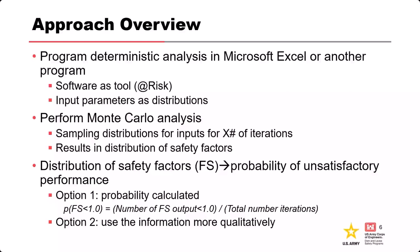The distribution of safety factors provides a probability of unsatisfactory performance — essentially an understanding of the likelihood of failure. There are two ways to use this. Number one: use it directly, plugging the result straight into your risk analysis. That is usually frowned upon because no model is as complex as reality — there's always going to be things left out. Option two: use the information more qualitatively, recognizing the shortcomings of those models and using results appropriately.